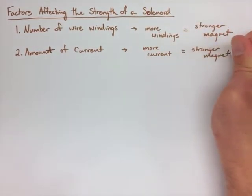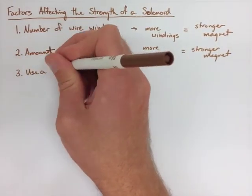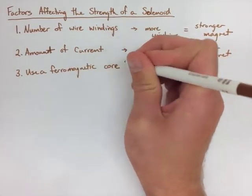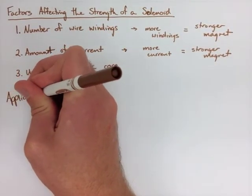And the third is we need to use a ferromagnetic core. And all that means is that it's an object that can actually possess a magnetic field or it can make a magnet.